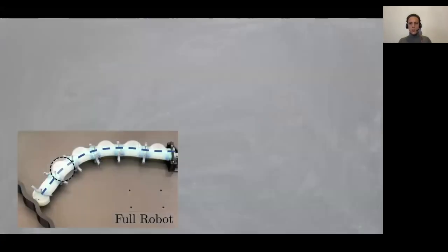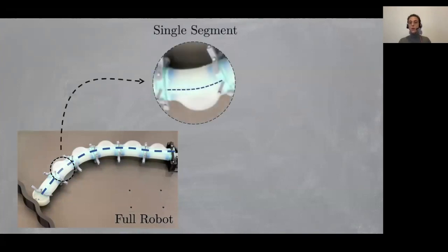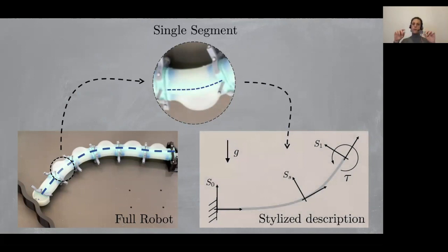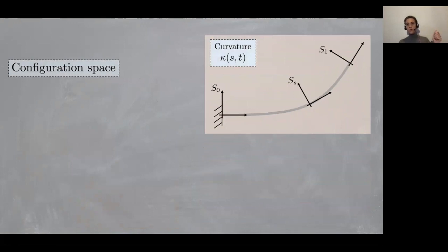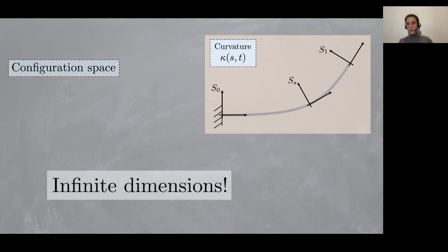Soft robots are typically made as a sequence of actuated segments. To simplify the analysis, we'll consider just one single actuated segment, and we'll further simplify by considering that all behavior can be described by its main axis. Which are the challenges here? First, the shape is a function that can be described using the curvature kappa at each point, which implies that the state is infinite dimensional.